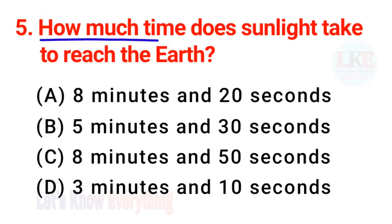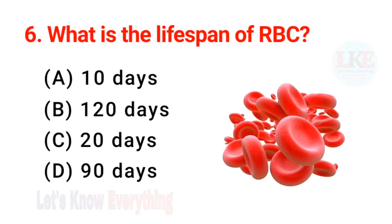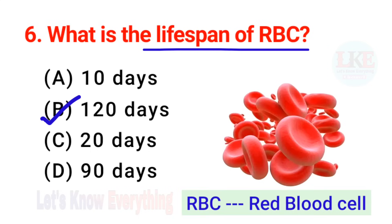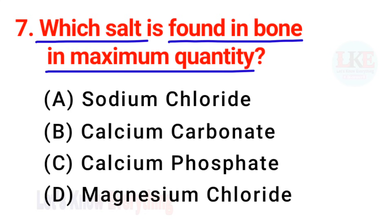Question number 5: how much time does sunlight take to reach the earth? Very important question. Right answer option A — 8 minutes and 20 seconds. Question number 6: what is the lifespan of RBC? Right answer — 120 days. The full form of RBC is red blood cell. Question number 7: which salt is found in bone in maximum quantity? Right answer option C — calcium phosphate.